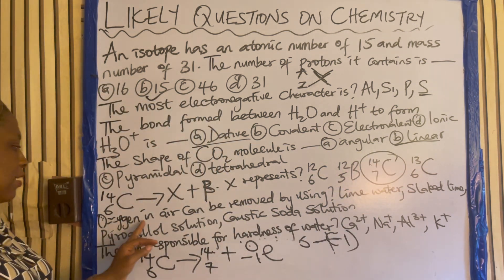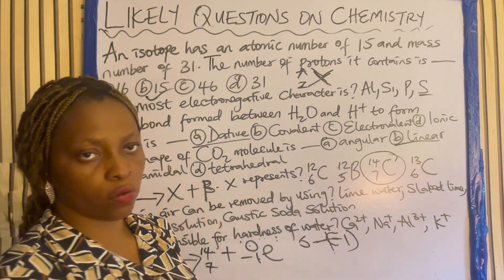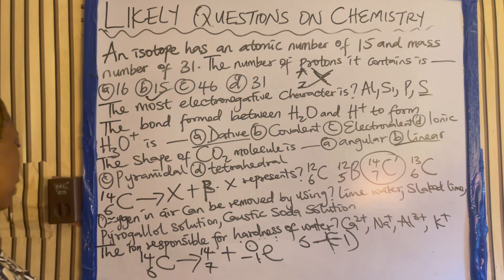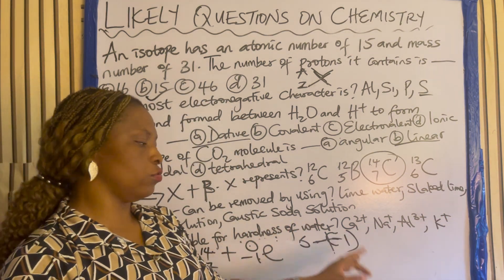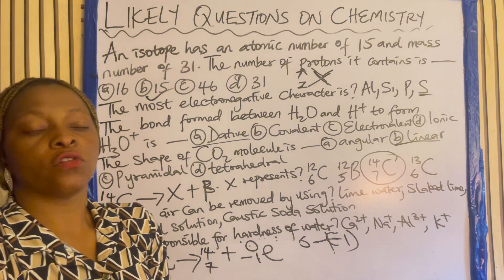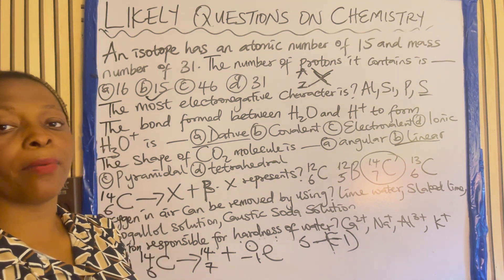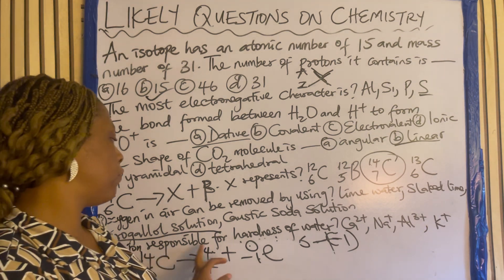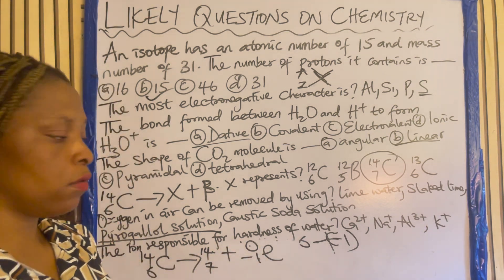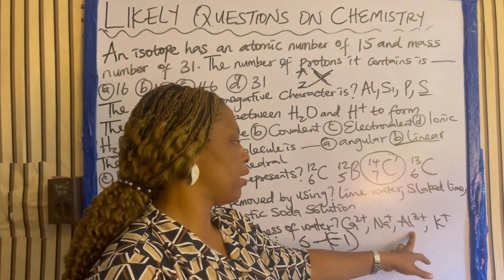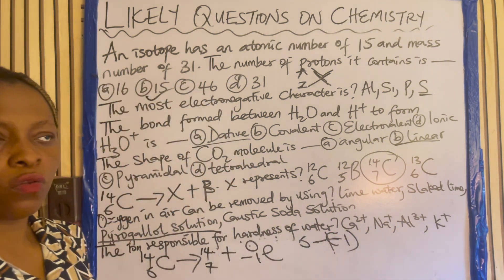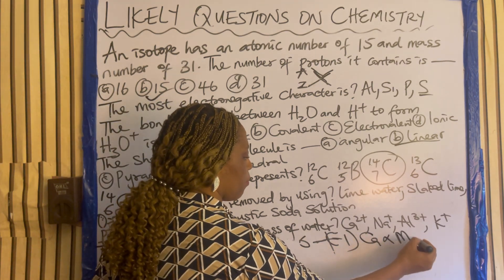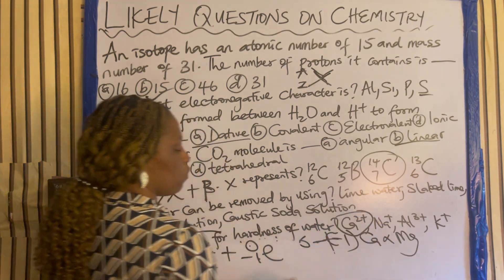Oxygen in air can be removed by using — lime water, slaked lime, pyrogallol solution, or caustic soda solution? Once you hear oxygen in air, think alkaline pyrogallol. So the answer is alkaline pyrogallol. The ion responsible for hardness of water is — calcium ion, sodium ion, aluminium ion, or potassium ion? Once you hear hardness of water, calcium and magnesium ions should come to mind. So the answer is calcium ion.